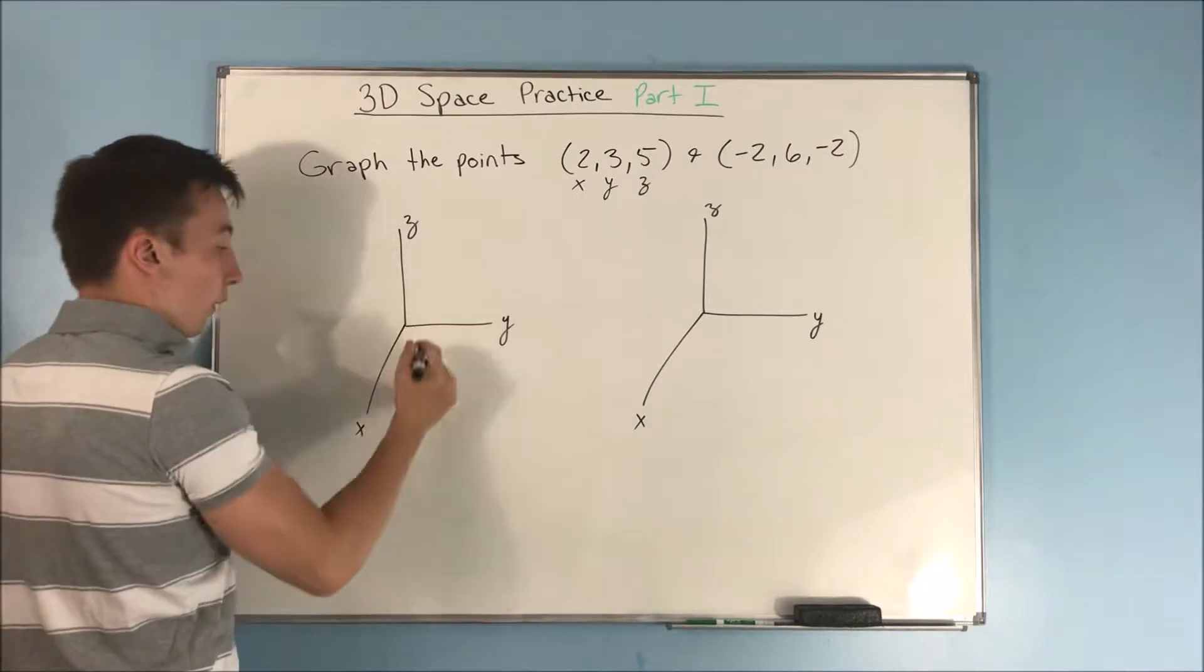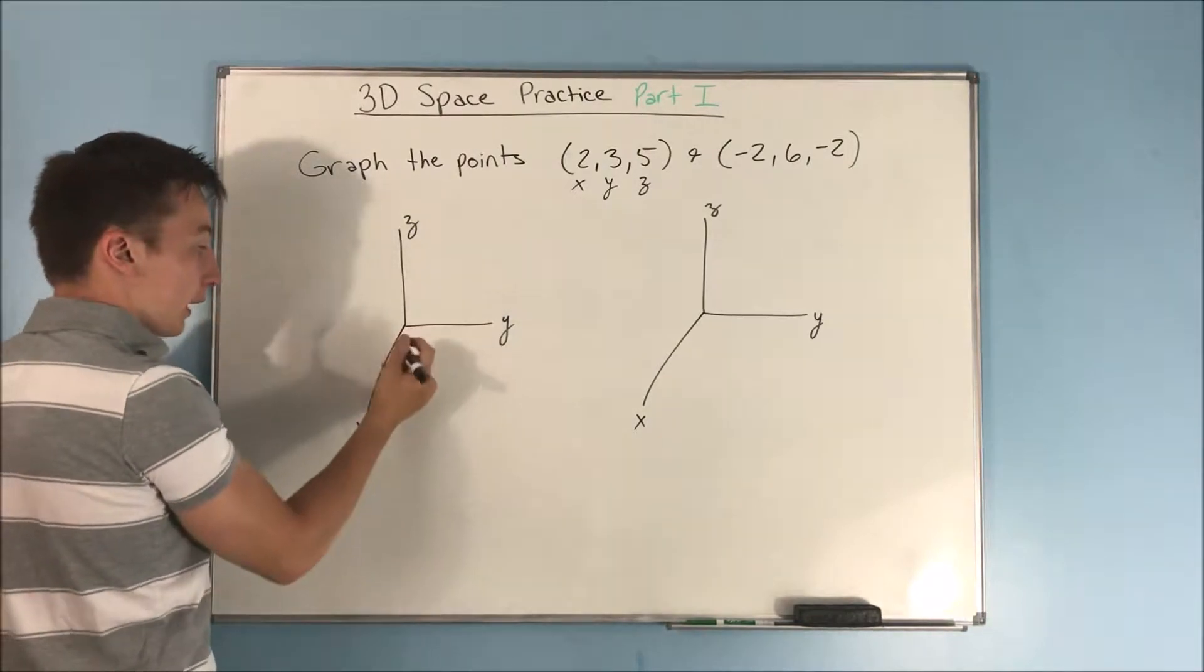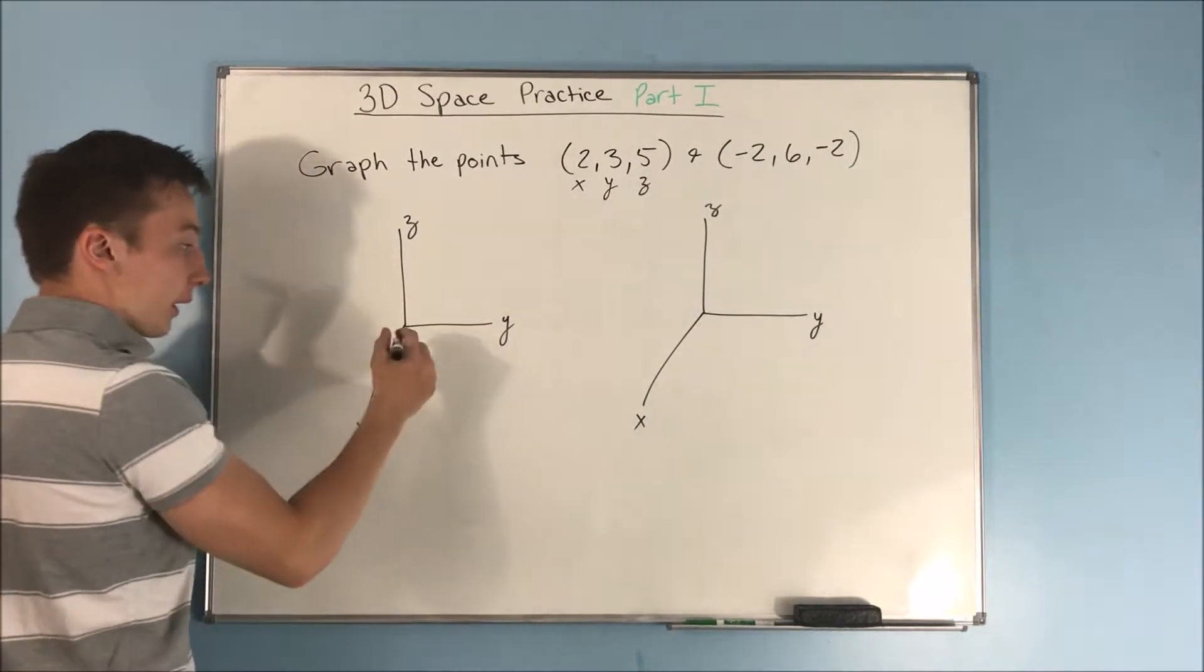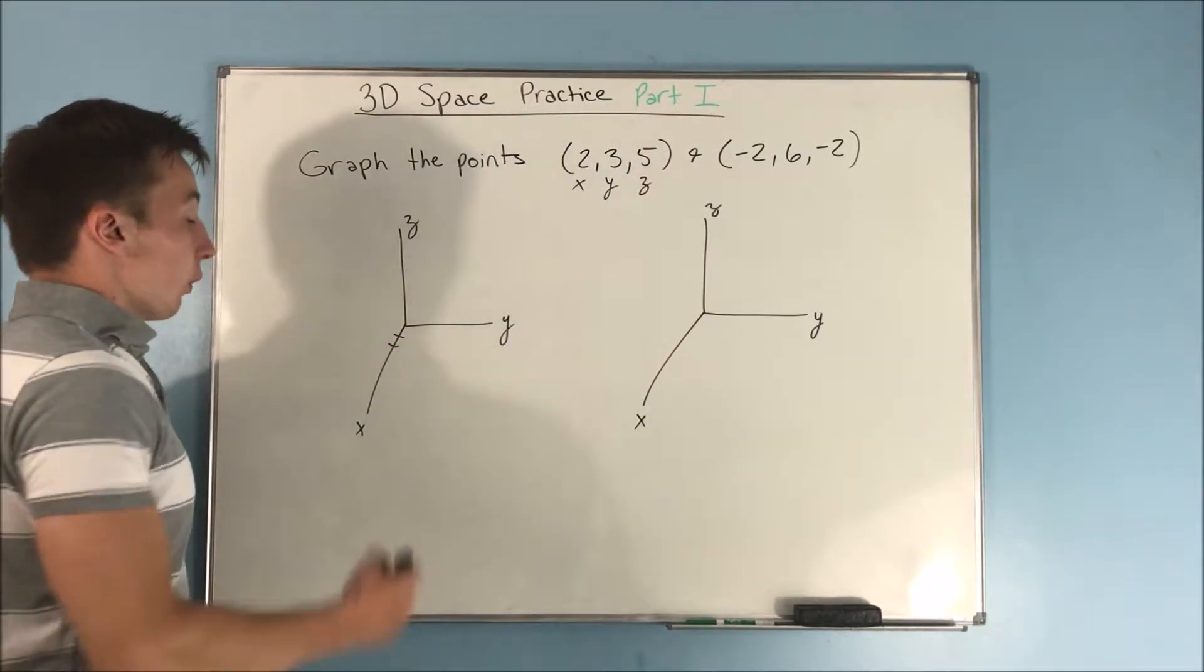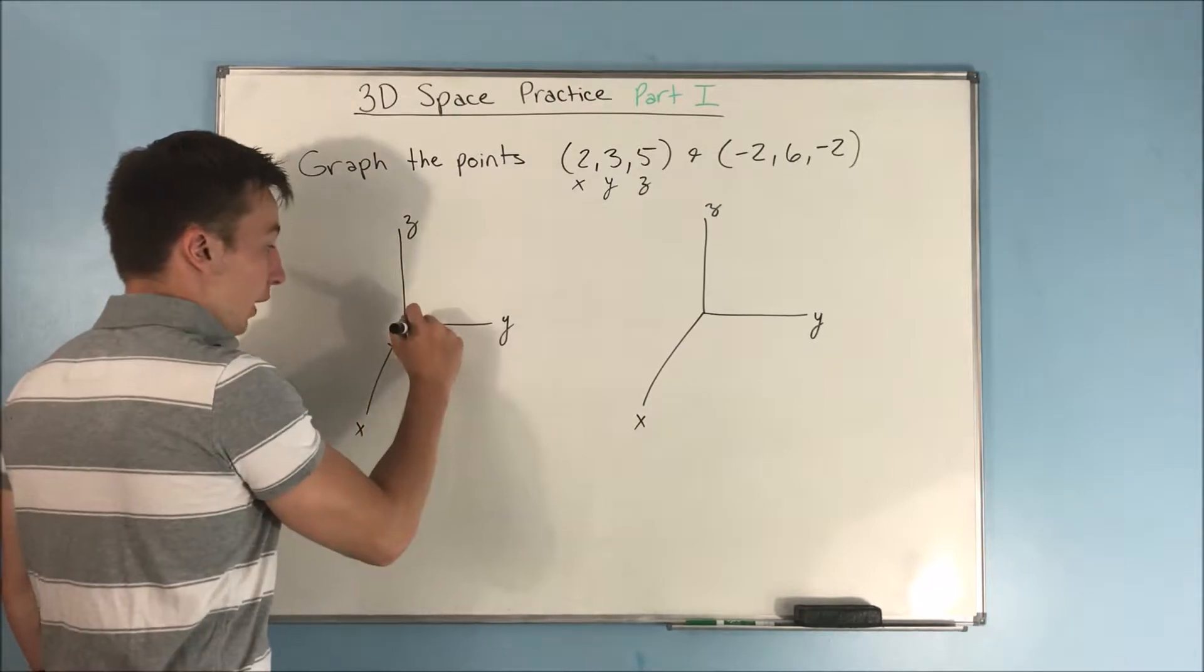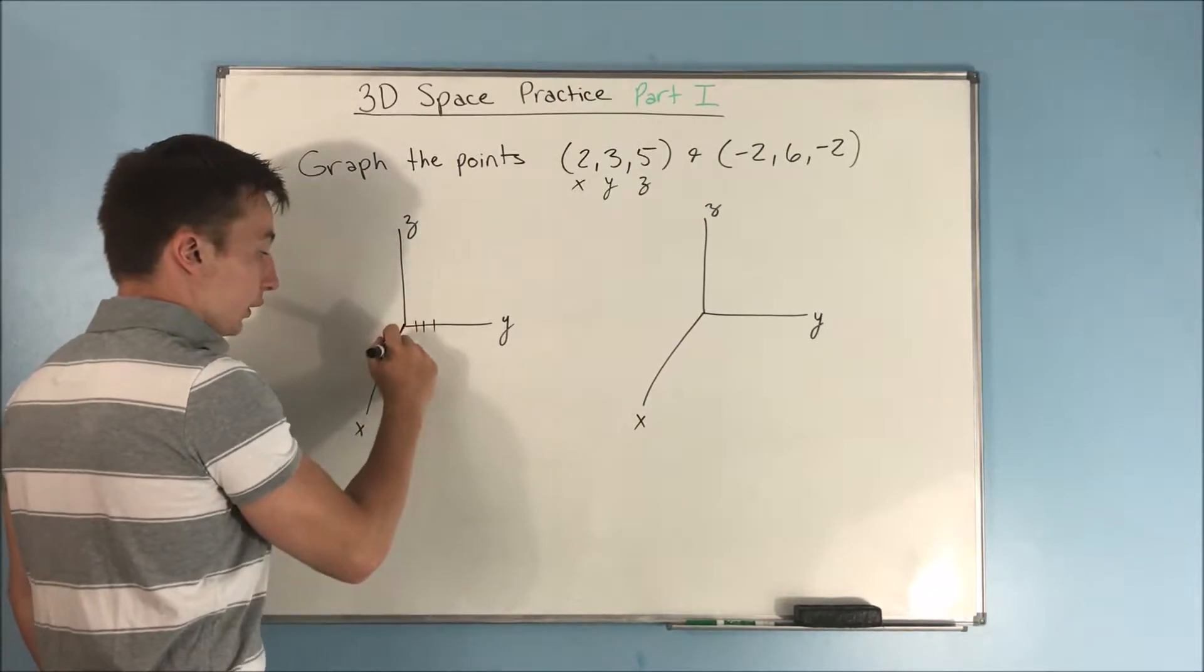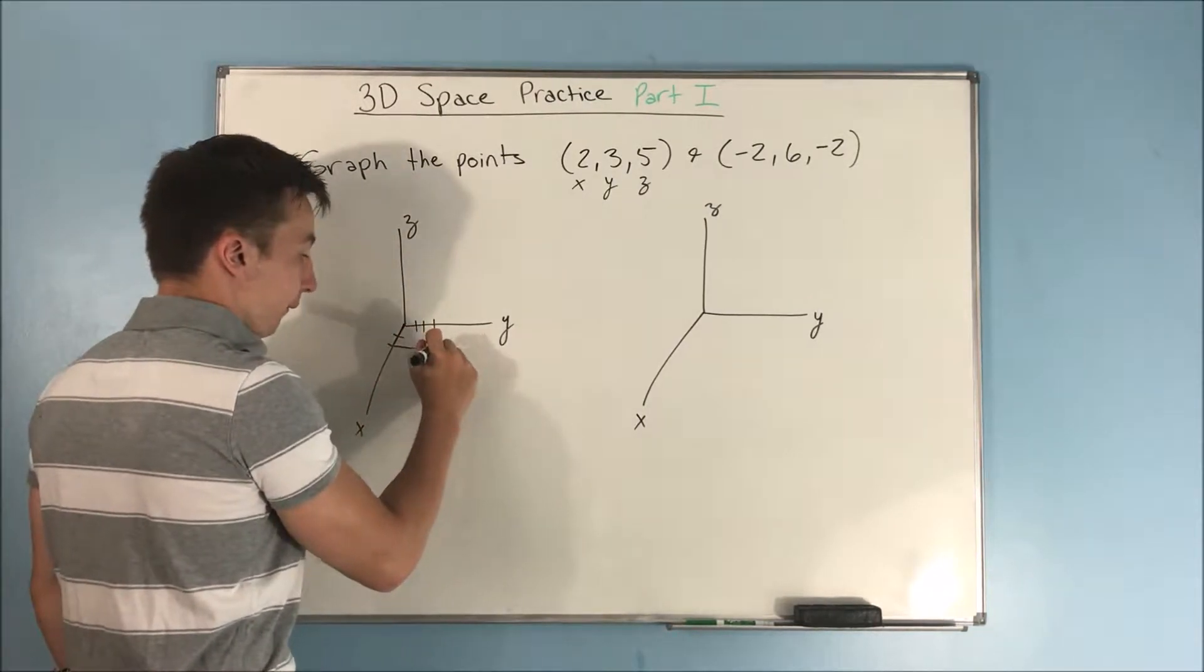So let's start off with our x axis, we have 2. Now, the positive direction for the x axis is this way, so we get 2 this way. Next we have 3 in the y direction. So we're going 2, and then over here.